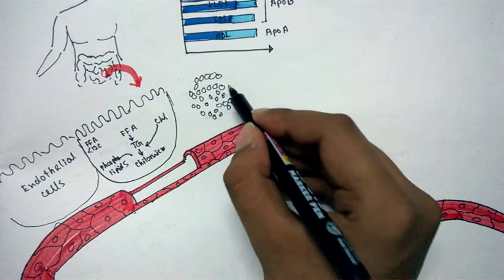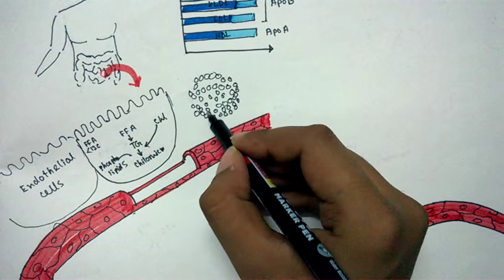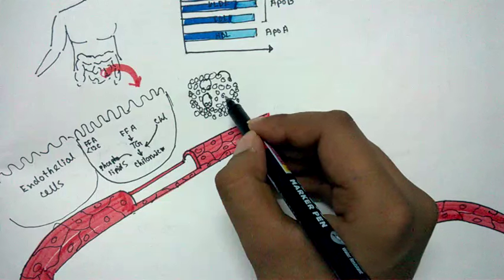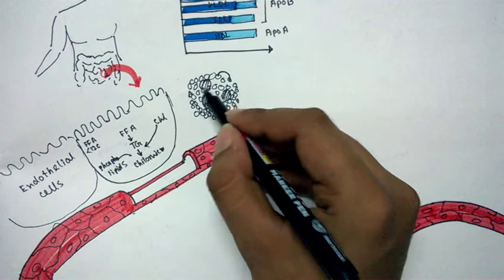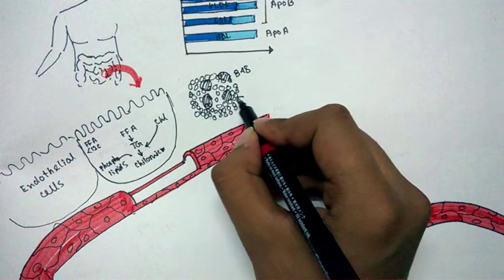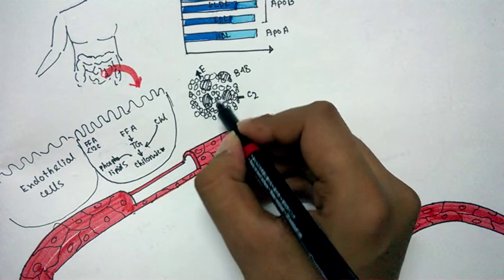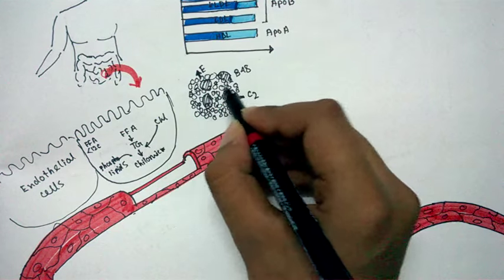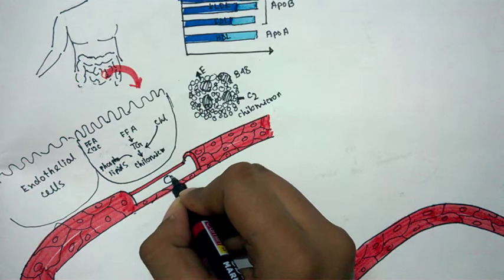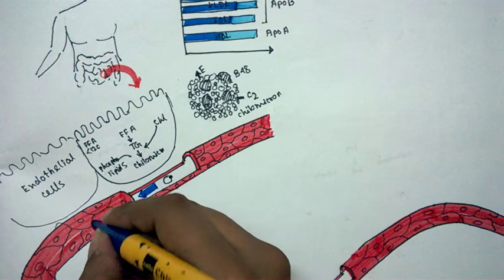This chylomicron, full of triglyceride, cholesterol, and some phospholipid, is secreted into the blood, where proteins get associated with it. These proteins are the ApoB family — most popularly ApoB48 — along with other proteins C2 and E. All these proteins together with the lipids form the chylomicron, represented as a small blob.